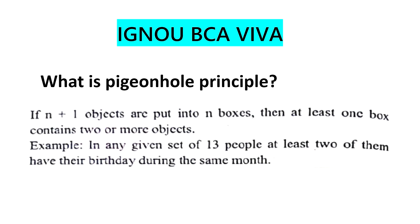What is the Pigeonhole Principle? It is very simple: if n+1 objects are put into n boxes, then at least one box contains two or more objects. For example, if there are 13 people, at least two will share the same birth month — because there are only 12 months, so at least one month must contain two people.